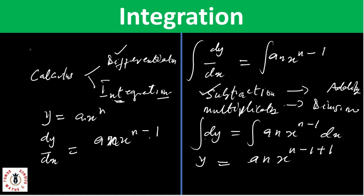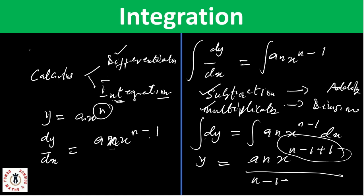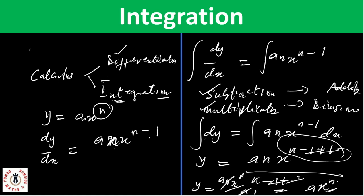Where we had subtraction we now have addition, and where we had multiplication — where we brought n as a coefficient to multiply — this time we divide by that coefficient. So the exponent becomes n minus one plus one, which is n. And the coefficient becomes a over n, giving us ax raised to power n over n, which simplifies back to ax raised to power n. This confirms that integration is the reverse of differentiation.